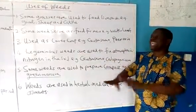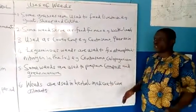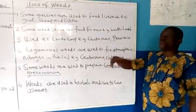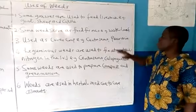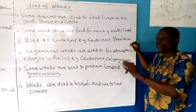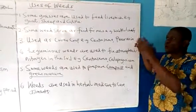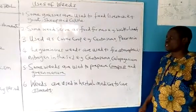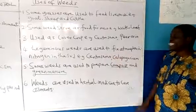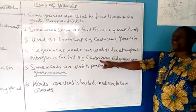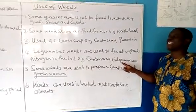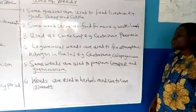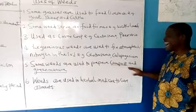Three: weeds are used as cover crops. In a large area of land exposed to erosion — either wind or water erosion — weeds can grow and cover such an expanse of land to prevent erosion. Examples of weeds that can be used as cover crops include Centrosema and Pueraria. Four: some weeds are leguminous and these weeds can fix atmospheric nitrogen in the soil. For example, Centrosema and Calopogonium are examples of leguminous weeds. They can help to fix and drain nitrogen from the atmosphere and fix it in the soil.